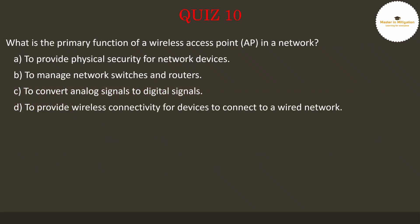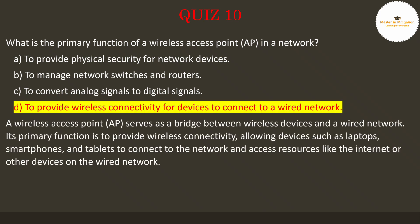Let's go to question 10: What is the primary function of a wireless access point (AP) in a network? Pause the video now to select the best answer. The answer is D: to provide wireless connectivity for devices to connect to a wired network. A wireless access point (AP) serves as a bridge between wireless devices and a wired network. Its primary function is to provide wireless connectivity, allowing devices such as laptops, smartphones, and tablets to connect to the network and access resources like the internet or other devices on the wired network.